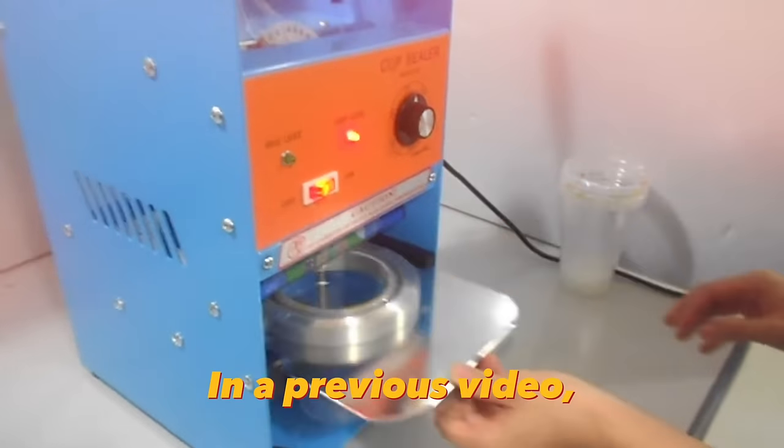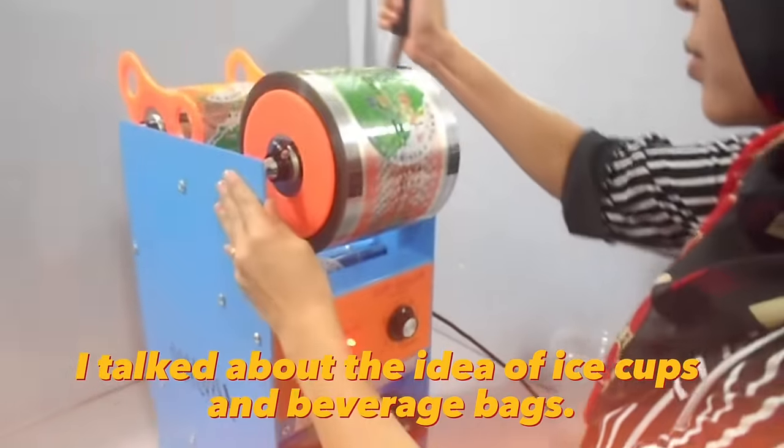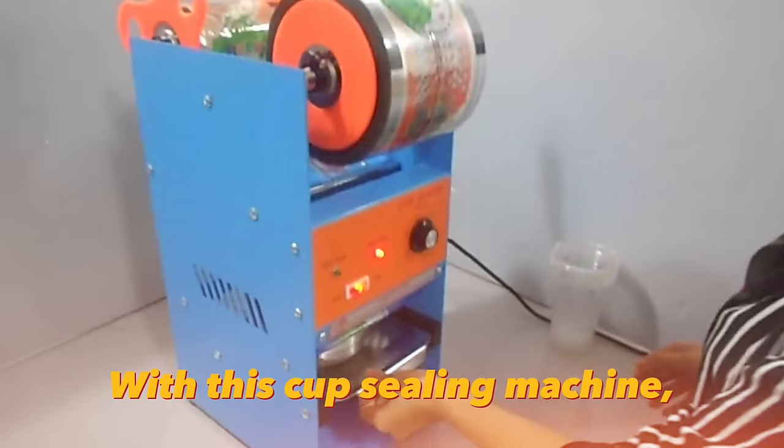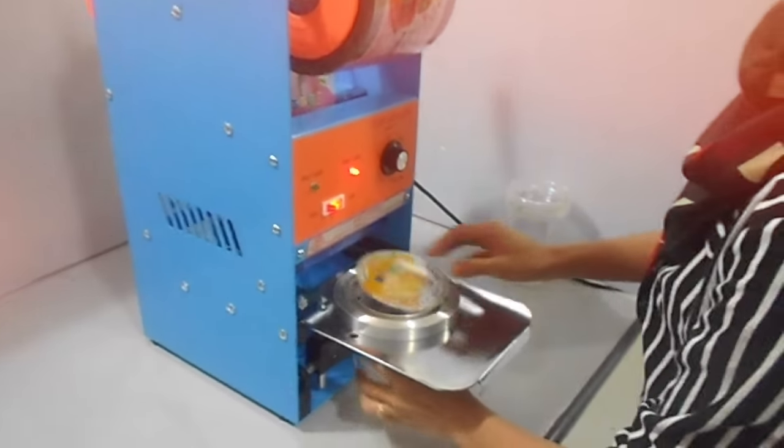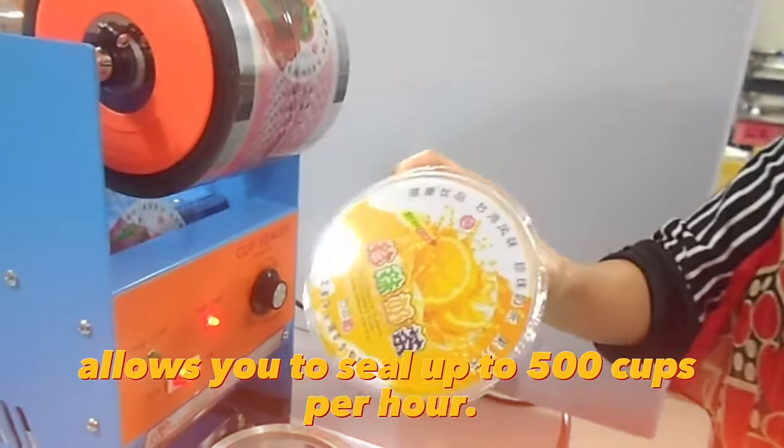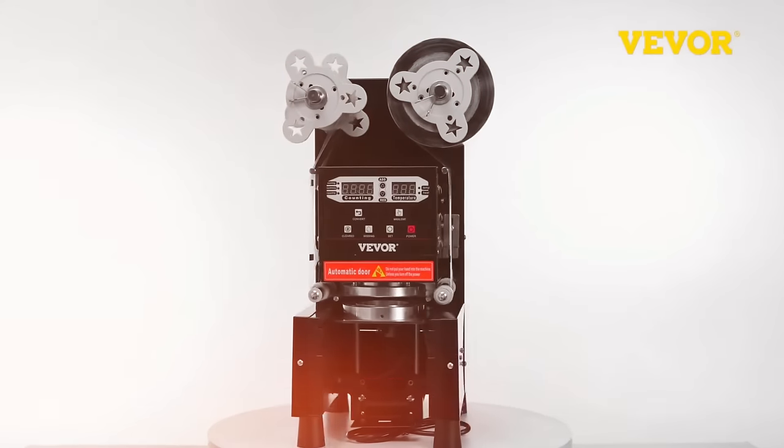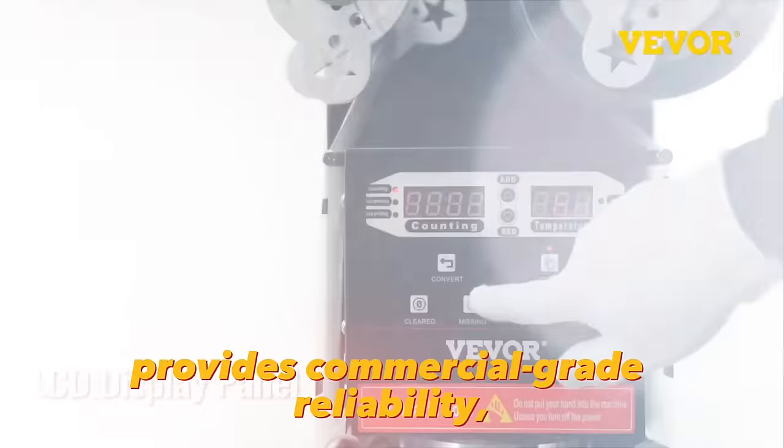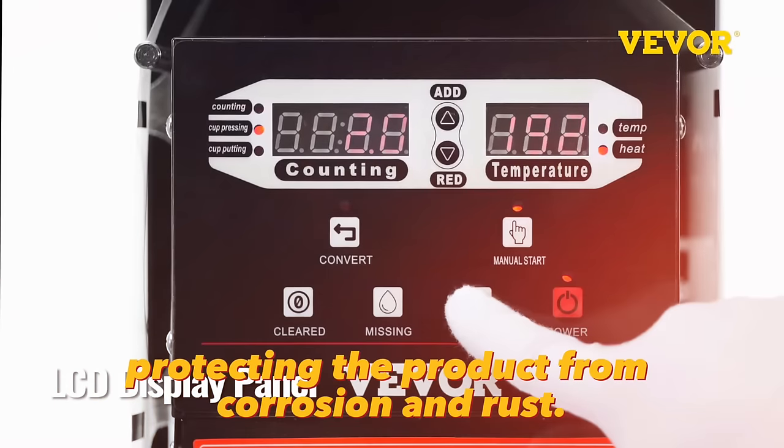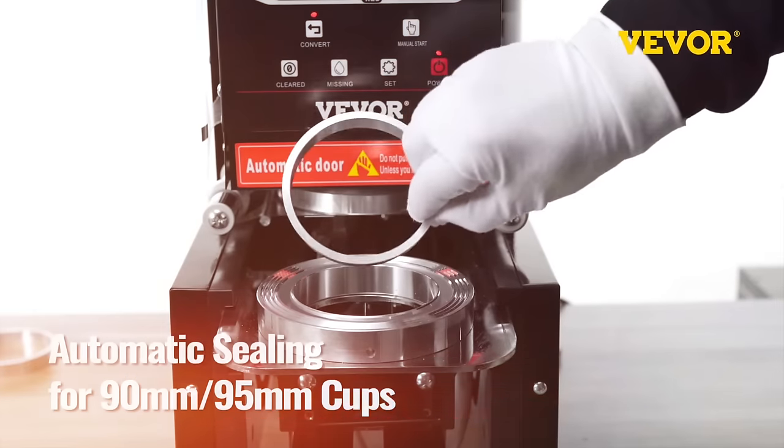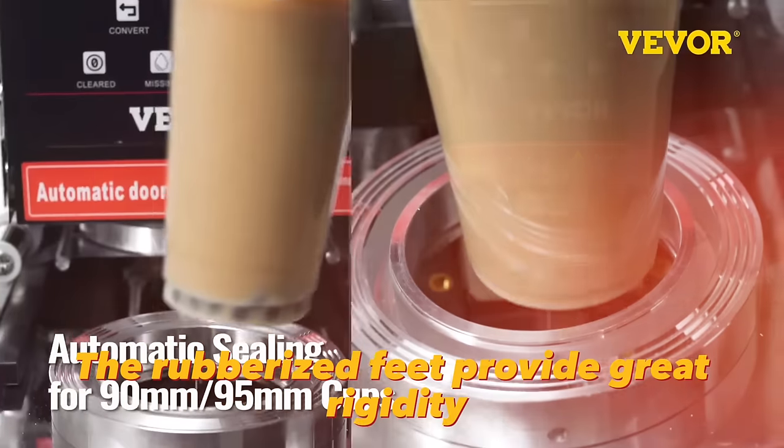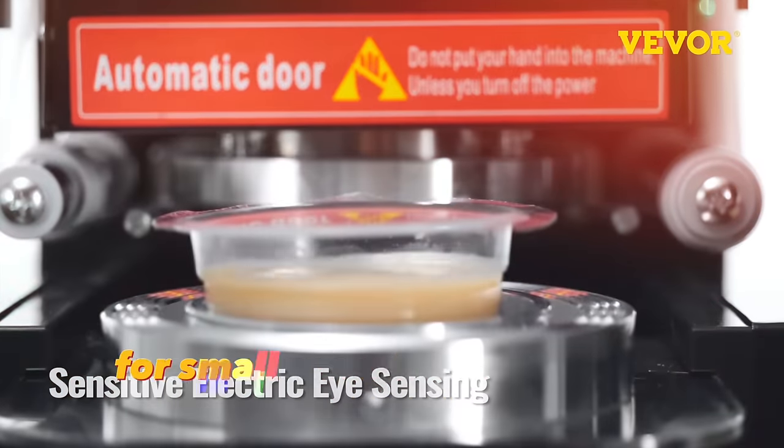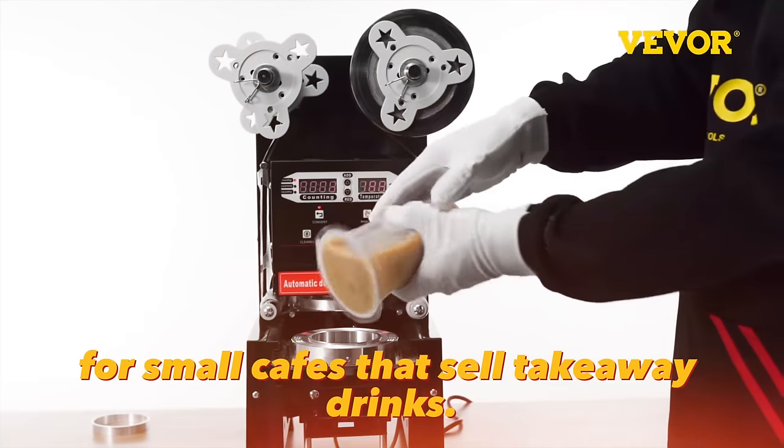In a previous video, I talked about the idea of ice cups and beverage bags. With this cup-sealing machine, you can do just that. This machine from Vever allows you to seal up to 500 cups per hour. The heavy-duty and durable carbon steel construction provides commercial-grade reliability, protecting the product from corrosion and rust. The rubberized feet provide great rigidity and stability. This machine will also come in handy for small cafes that sell takeaway drinks.